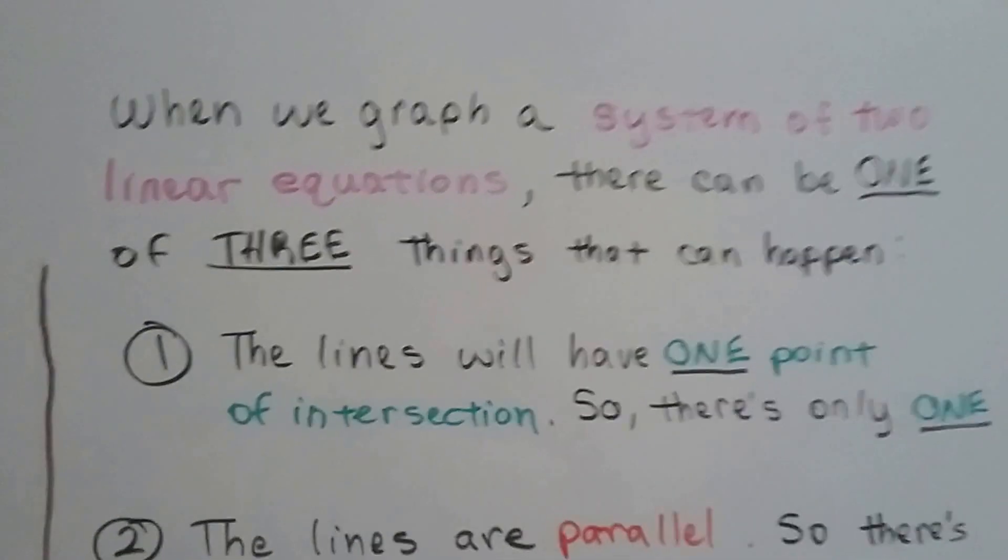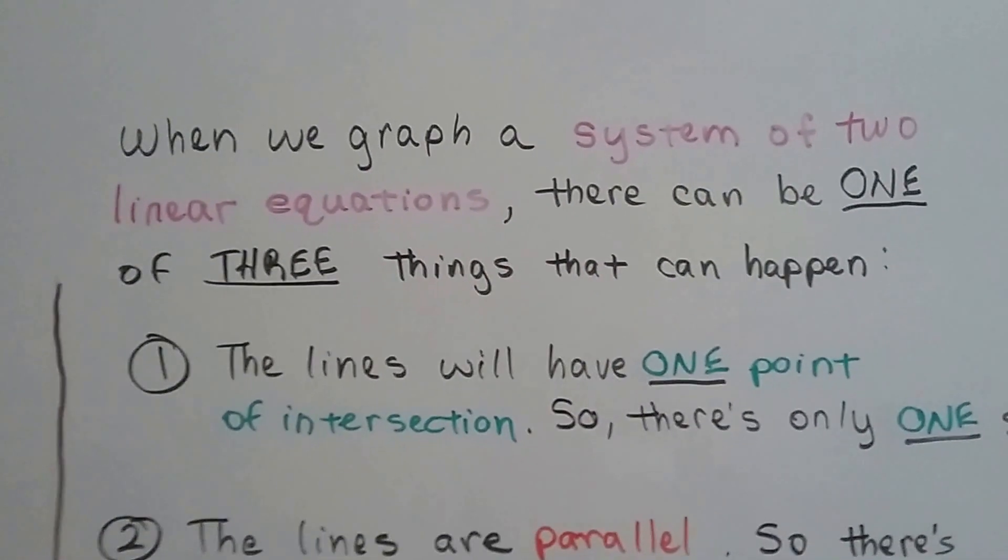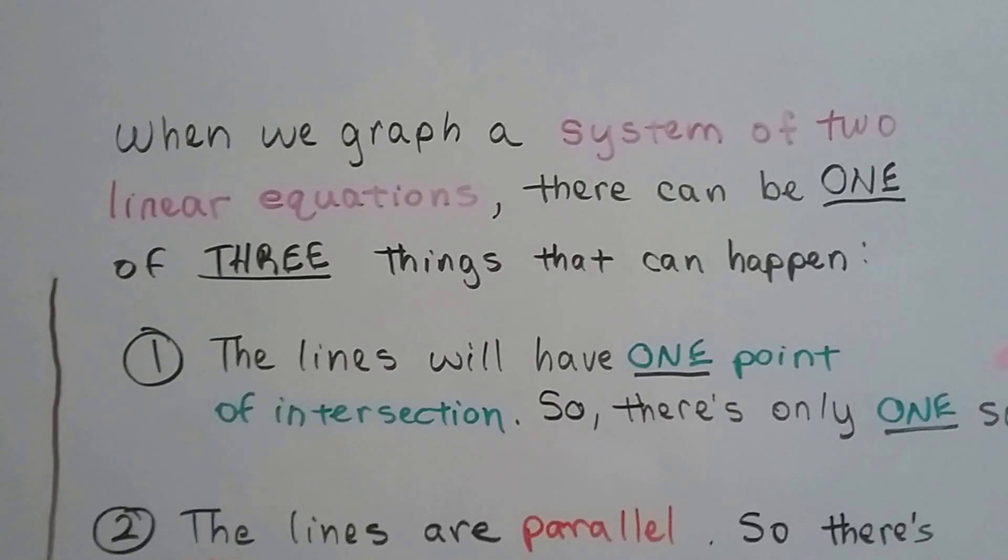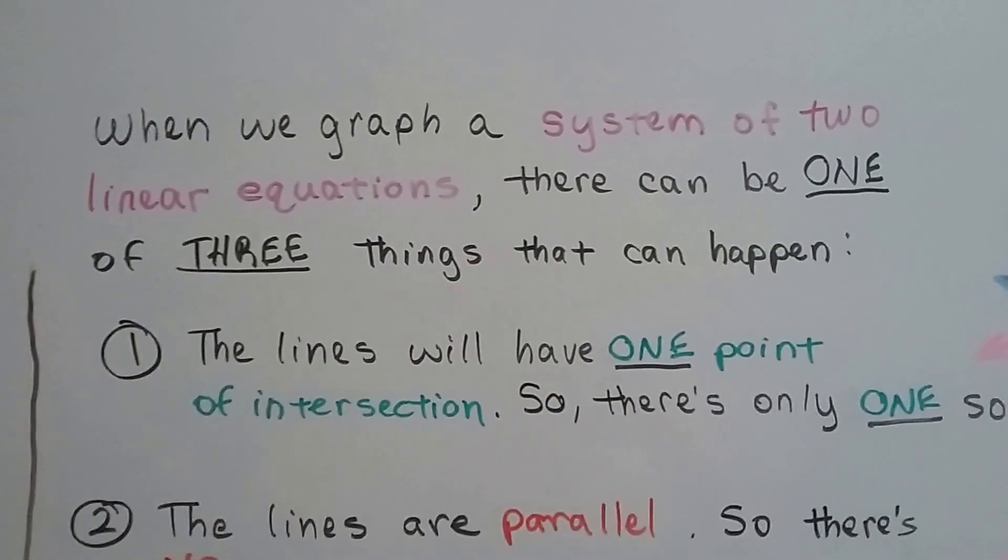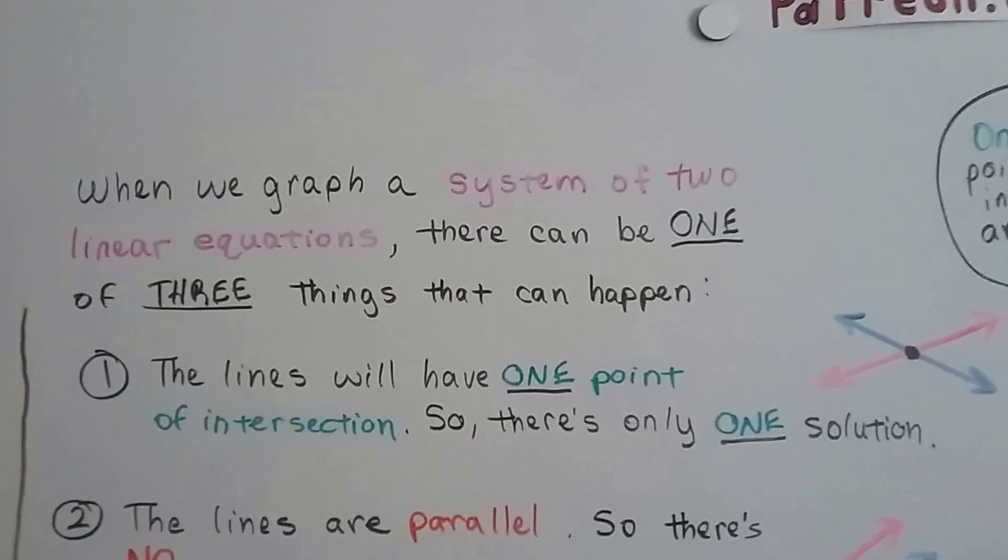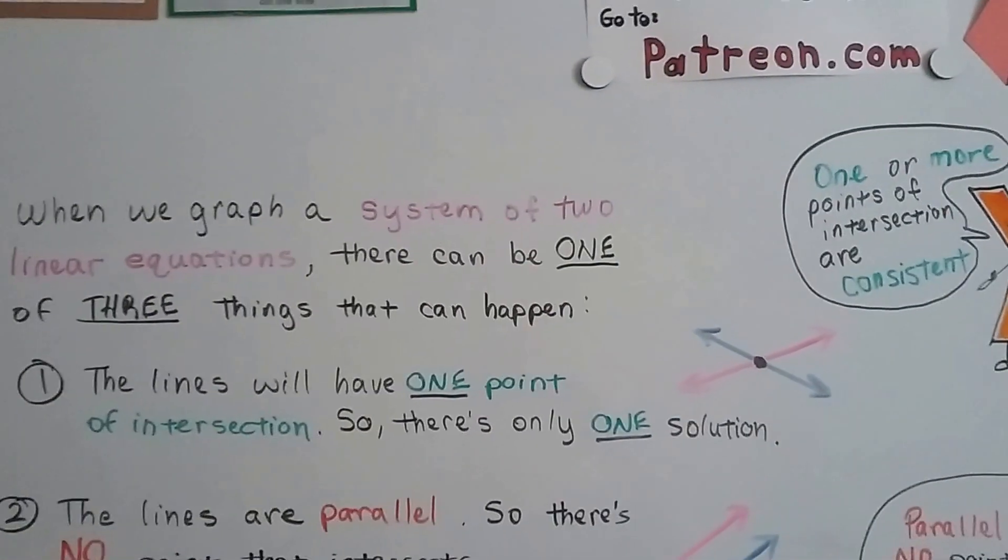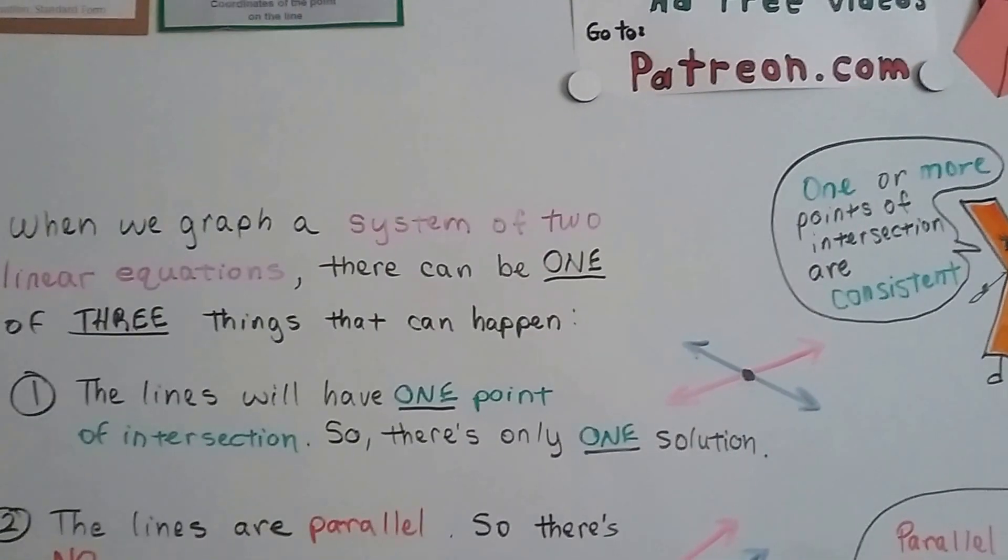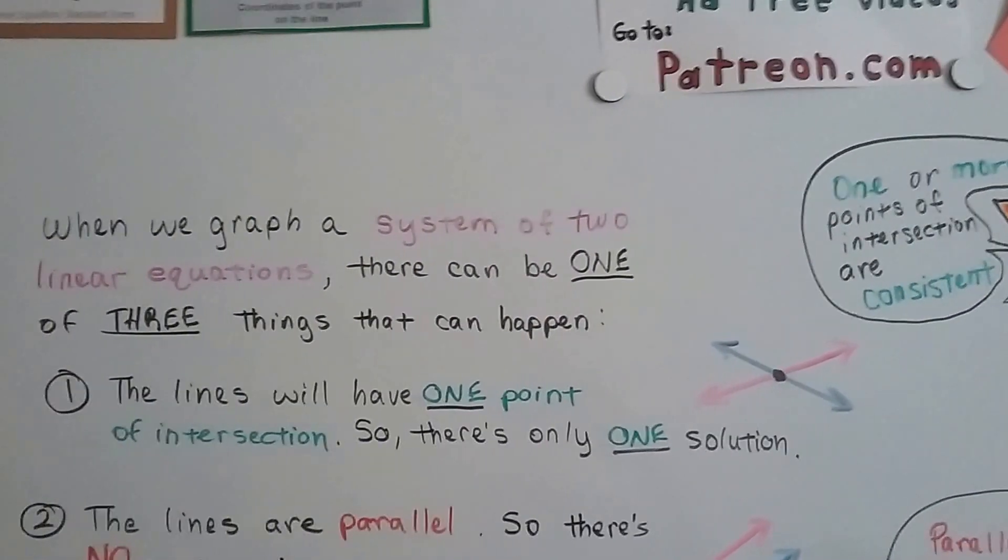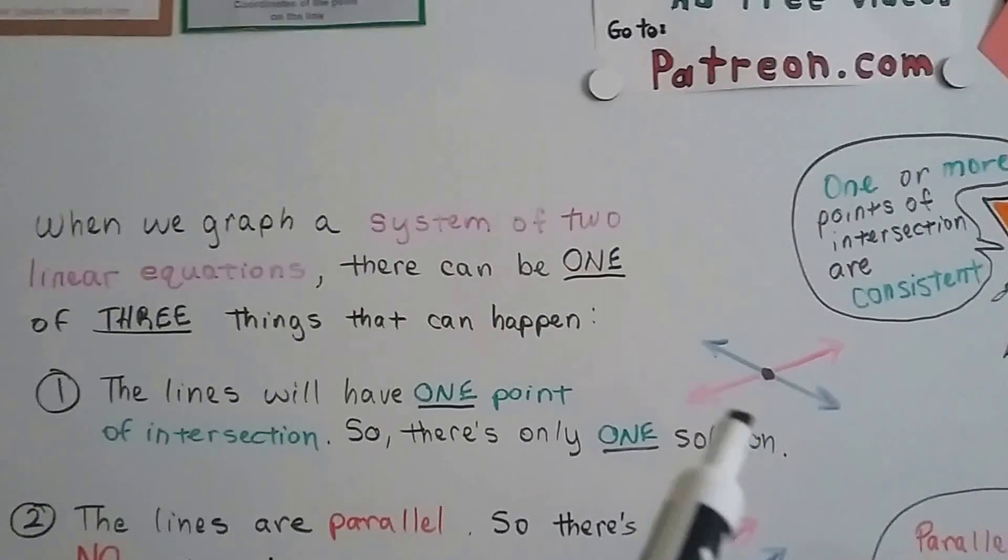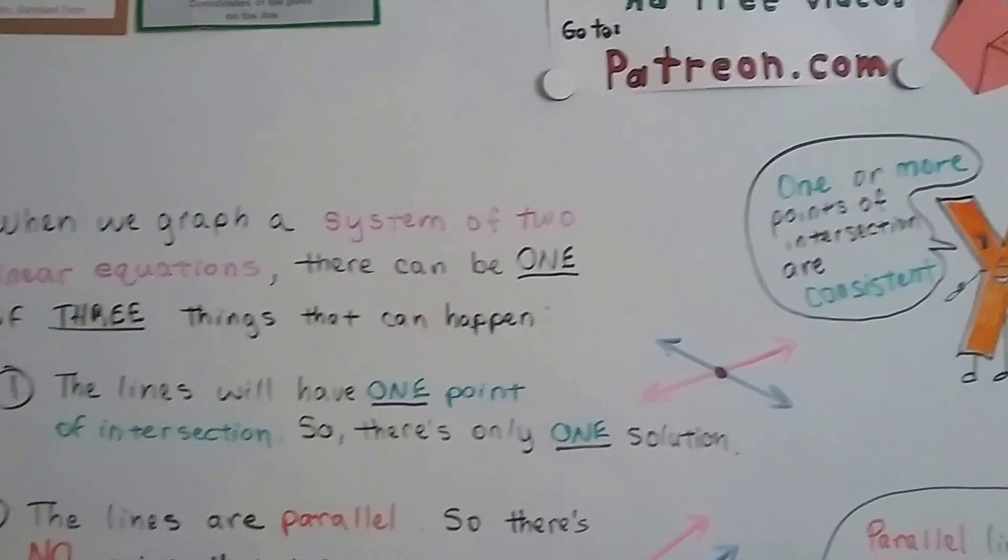Because now I'm going to explain to you about when we graph a system of two linear equations like we just did, there can be one of three possible things that can happen. The first one is that the lines are going to have one point or more of intersection. So there's one solution. That's where they cross. The place where they crisscross is the solution to the system of equations.